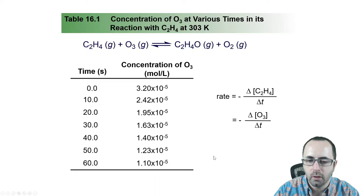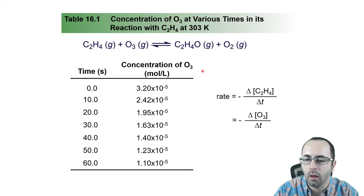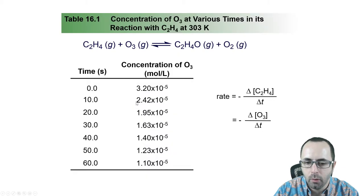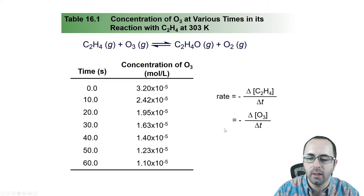Here's an example using real data for the reaction C2H4 + O3. We can measure one or both of the reactants, or we could measure the rate from the product side, but it's usually easier to measure the reactants. Here the concentration of ozone was measured, and as time passed, the concentration was going down. The rate is the change in [O3] over the change in time, and we put a negative in front because ozone is a reactant, turning the rate into a positive value.